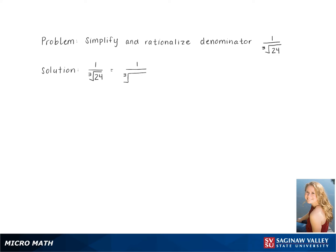So this gives us 1 over the cube root of 6 times 4. Breaking that down further gives us 1 over the cube root of 6 times 2 times 2.